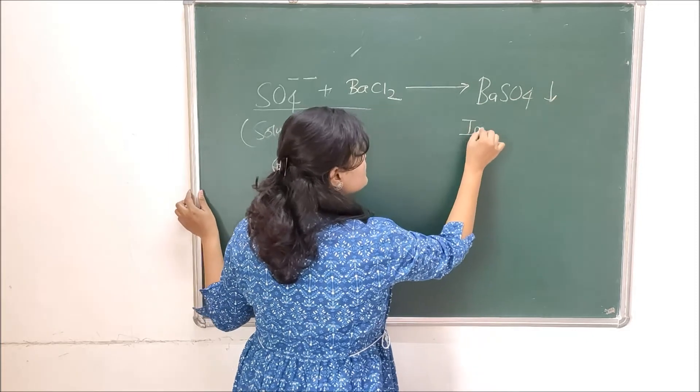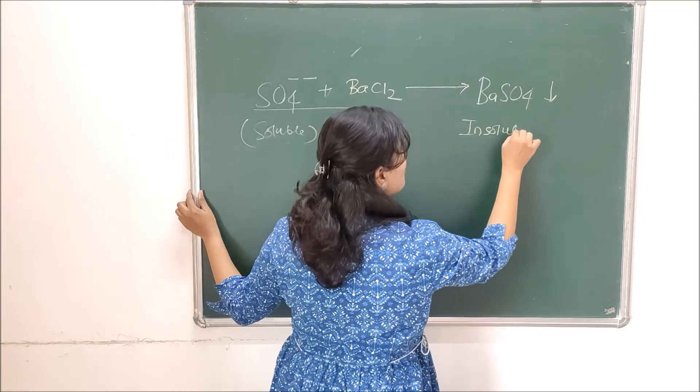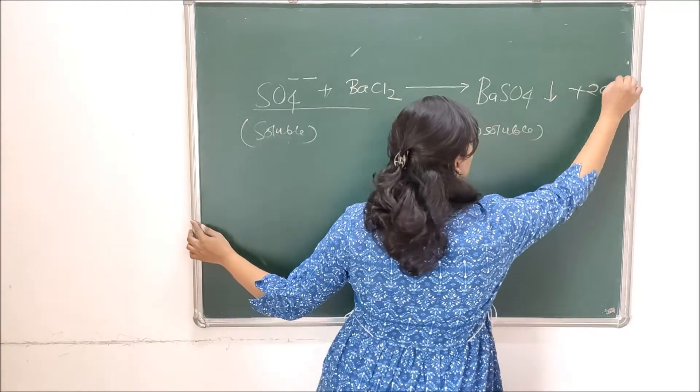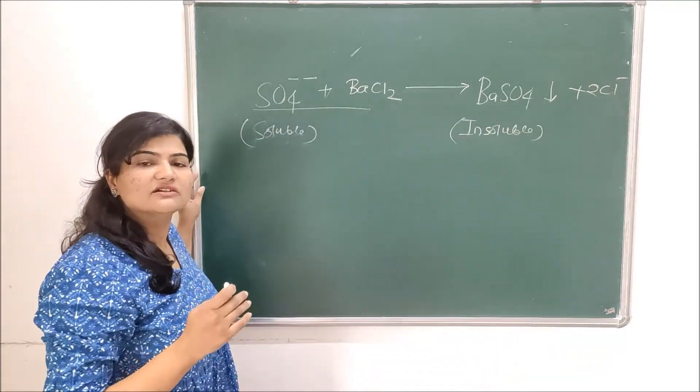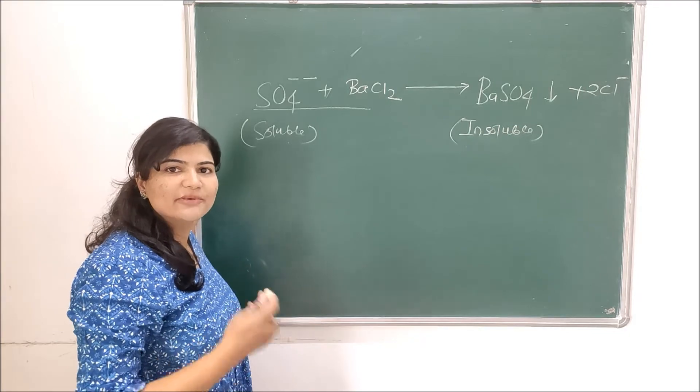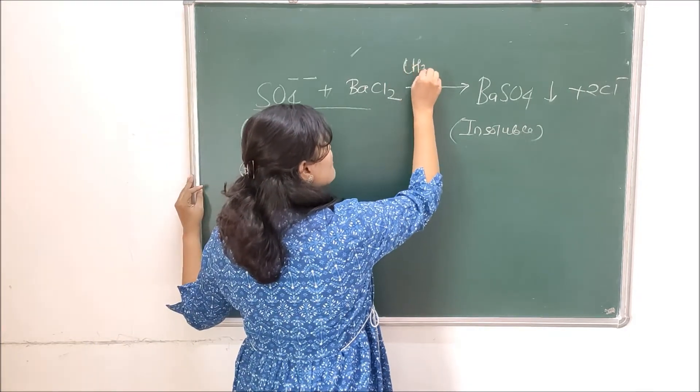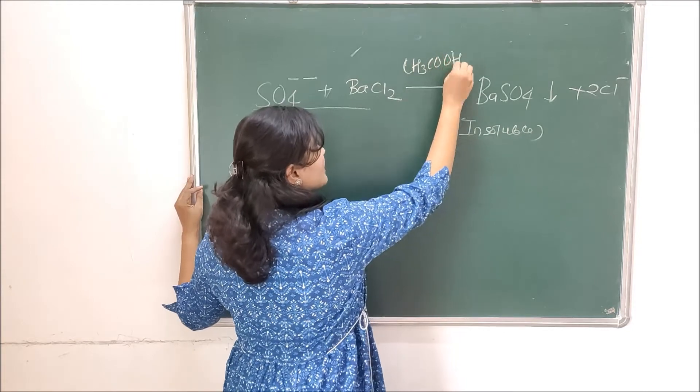Now being a precipitate, this is the insoluble form of sulfate, and these chloride ions will set free. Now this reaction requires certain conditions to maintain. We carry out this reaction in presence of acetic acid.